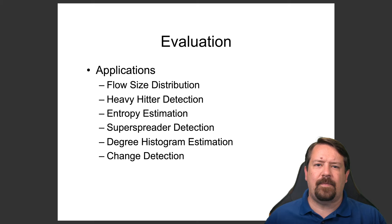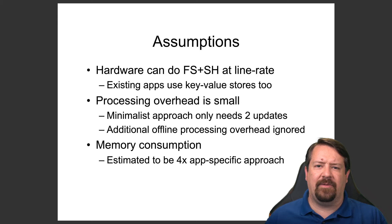The applications — meaning the analyses to be performed on the collected network traffic — include flow size distribution, heavy hitter detection, entropy estimation, super spreader detection, degree histogram estimation, and change detection. The assumptions are that the hardware can perform flow sampling and sample and hold at line rate, which is reasonable given existing router primitives. Processing overhead is assumed to be small, and there is an estimate about memory consumption. It's important to recognize that this paper does not include an actual hardware implementation; these are based on assumptions about the capabilities of hardware in use at the time.